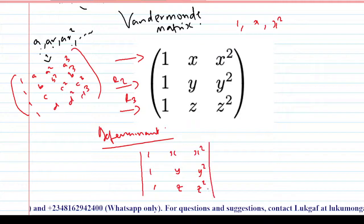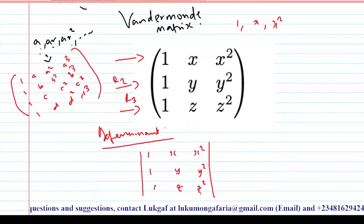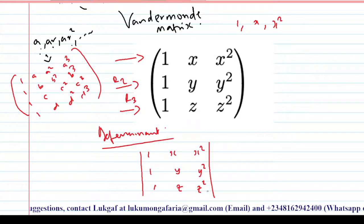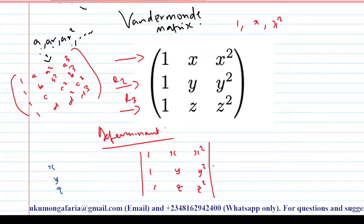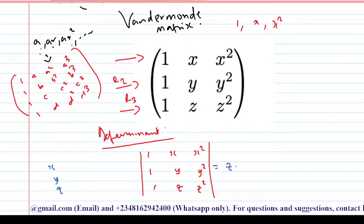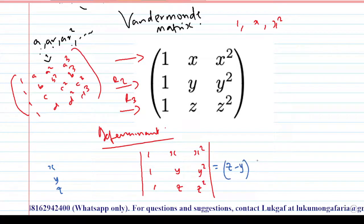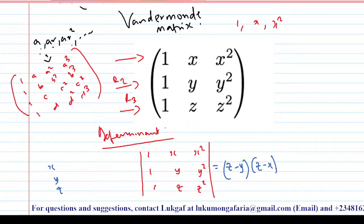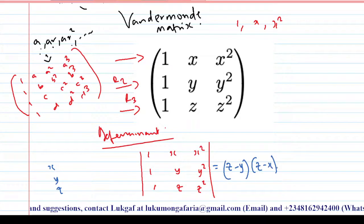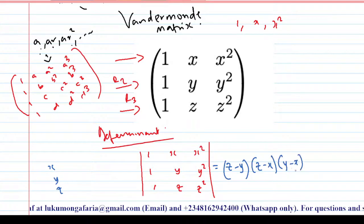what you have to do is go to the third row. You have x, y, z. Take z first, then subtract y from it and subtract x from it. We've taken z and paired it with y and x, then you also take y and pair it with x.